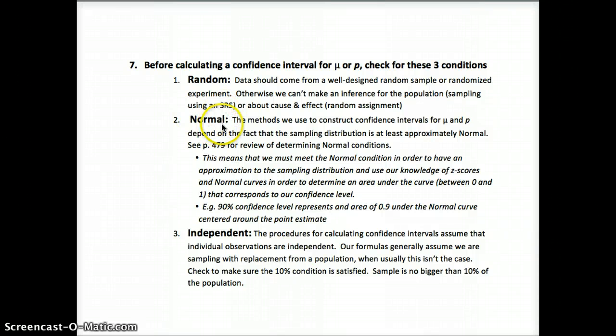The normal condition will vary for sample means versus sample proportions. For sample proportions, we check that n times p-hat is greater than or equal to 10, and n times (1 minus p-hat) is greater than or equal to 10. A quick trick: just look at the number of 'yeses' and the number of 'noes' in your sample — both must be at least 10. For independence, we must sample less than 10% of the population so we can use our standard deviation formulas. The formula for standard deviation differs between proportions and sample means.